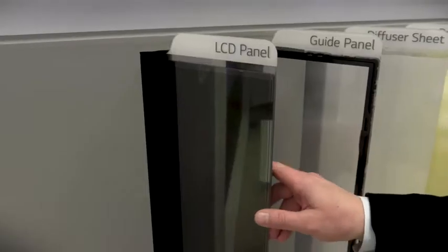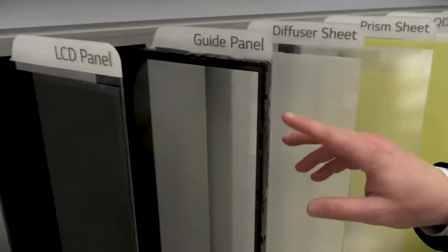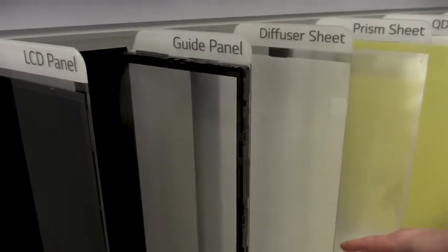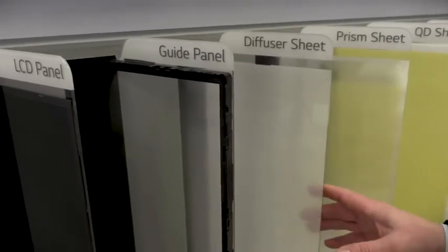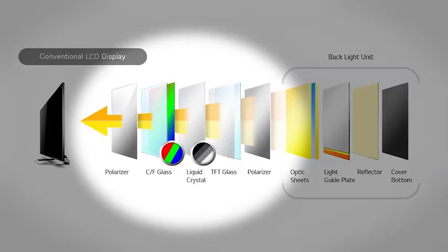LED TVs are actually LCD TVs with LED backlights. LCD panels can't produce their own light — they simply filter light through all these layers you see here to create color combinations leading to the picture you see. Light-emitting diodes, or LED backlights, sit behind LCD screens and provide the light they need.